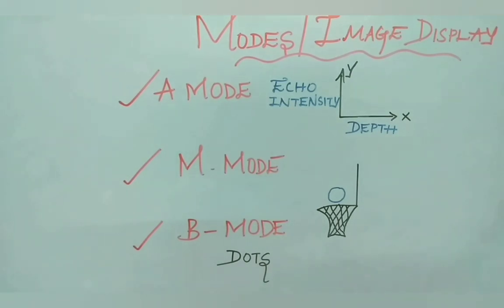B mode or brightness mode displays images as large and small dots. Large dots represent the strong echoes and small dots represent the weak echoes. The brightness of dots depends upon the amplitude as well as intensity of the echoes.